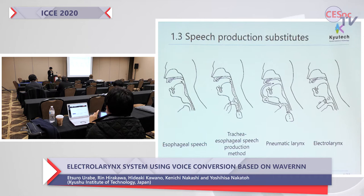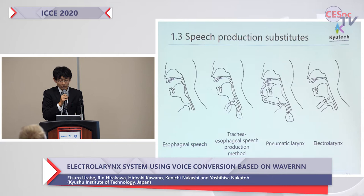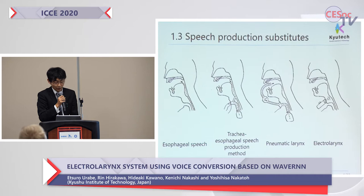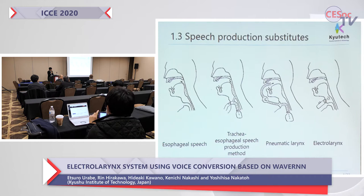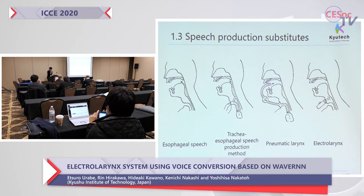There are several speech production substitutes. Esophageal speech is a method of generating speech by vibrating the esophagus. The tracheoesophageal speech production method uses a small hole between the trachea and the esophagus to produce voice using air from the lungs.